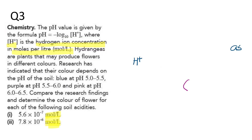For the following questions, they are very lengthy but actually they are all very simple. It is just basically substituting the relevant data into the formula given. In this case, you are given a formula to evaluate the pH value. The formula is given to you, and you just need to know what H-plus represents. H-plus represents the hydrogen ion concentration in moles per liter. We have some plants that produce flowers in different colors depending on the pH level of the soil.